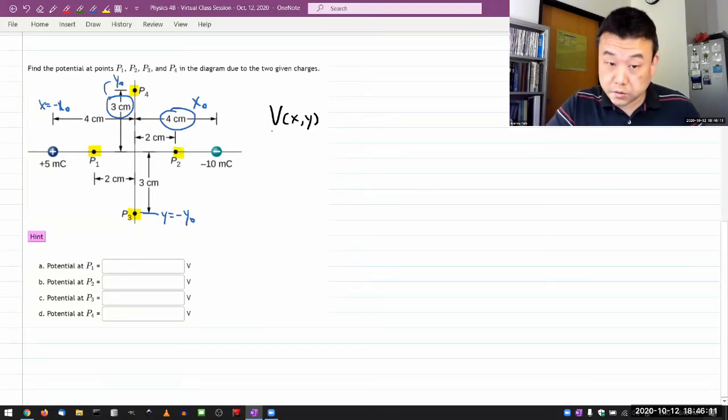So once you work this out generally, then all you have to do to get the numbers for A, B, C, D, all four parts is plug in the coordinates.